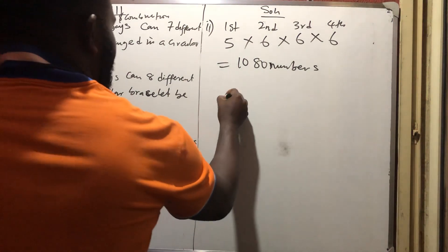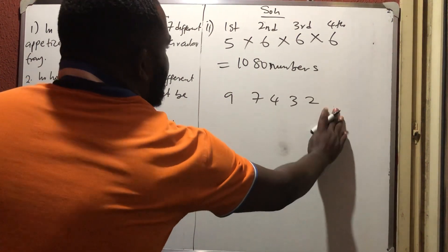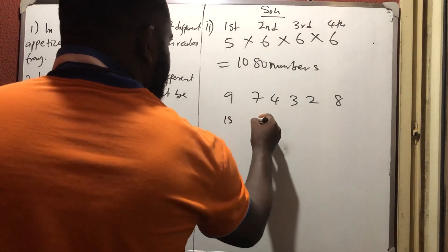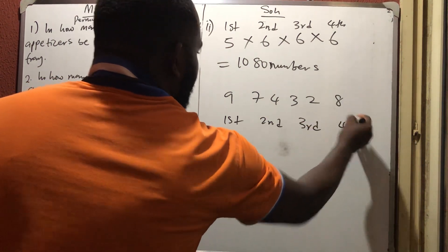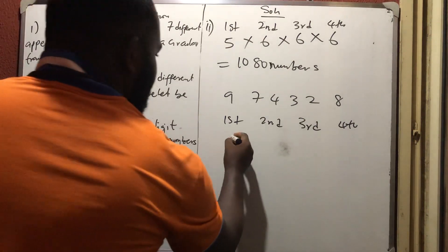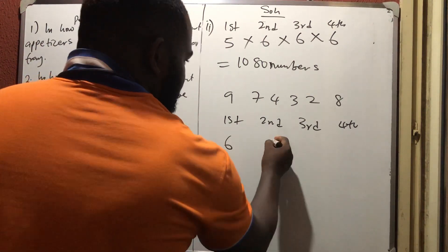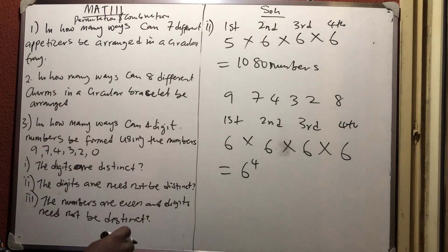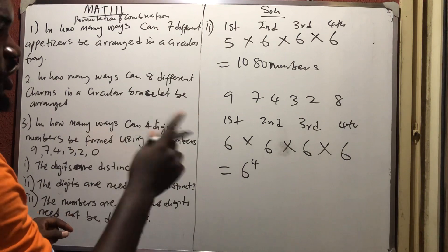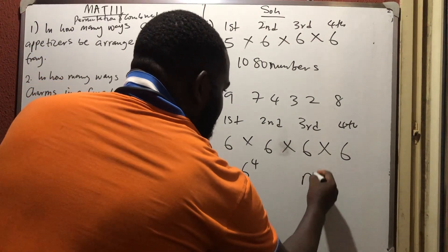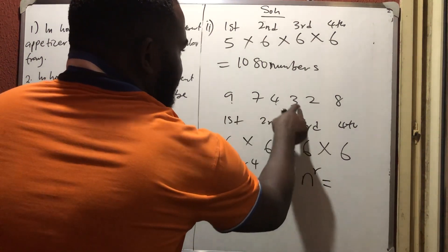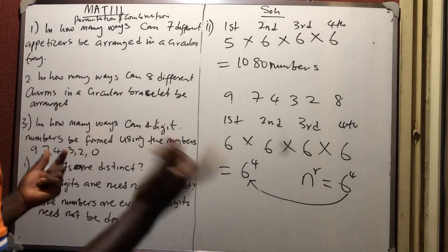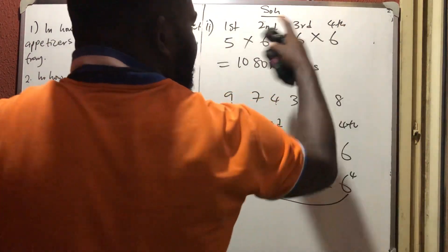To demonstrate with digits 9, 7, 4, 3, 2, 8: if repetition is allowed, each position after the first can use all 6 digits. So it's 6×6×6×6 = 6⁴. When all digits can work with repetition, the formula is simply N raised to the power R, where N is how many digits there are and R is how many digit positions you're forming. This gives the same answer.